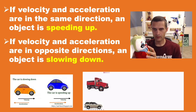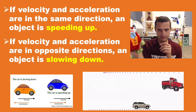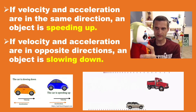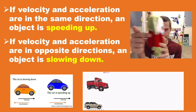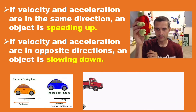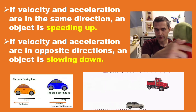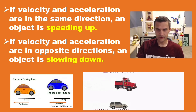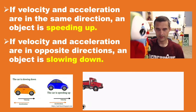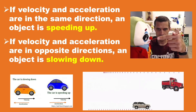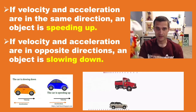Here's the general rule. If something is speeding up — getting faster — the change in its velocity is in the same direction as its motion because the magnitude is increasing. So if velocity and acceleration are both in the same direction, the object will speed up. If something is going one way but getting slower, the change in its velocity is opposite its direction. So if velocity and acceleration are in opposite directions, something is going to slow down.